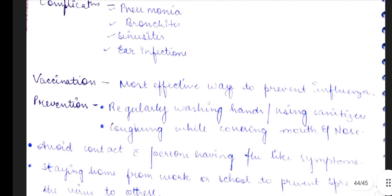The most effective way to prevent influenza is vaccination. The influenza vaccine is a must for its prevention. Prevention can also be done if a person maintains hygiene — that is, regularly washing hands using soap or sanitizers.